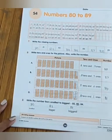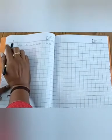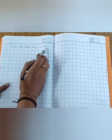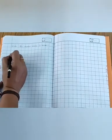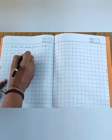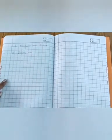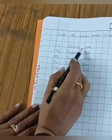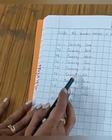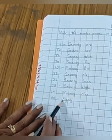We completed our workbook. Now, open your classwork. Write the date. Write the number name, 71 to 80. Now, we have to write 71 to 80. 71, seventy-one. 72, 73, 74, 75, 76, 77, 78, 79, 80.